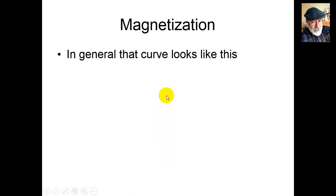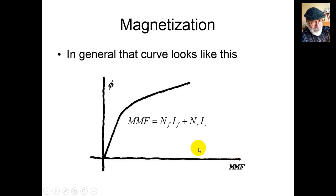That curve looks, in general, something like this. In an ideal world, the curve would give us the flux in the air gap for a given magnetomotive force applied by the S coil and F coil. We would compute the MMF, enter the curve with that value, and find the flux. But no.